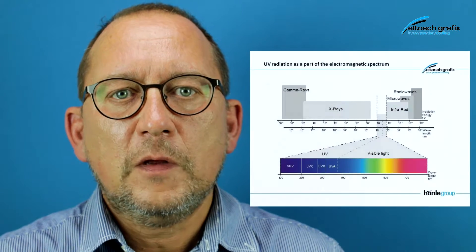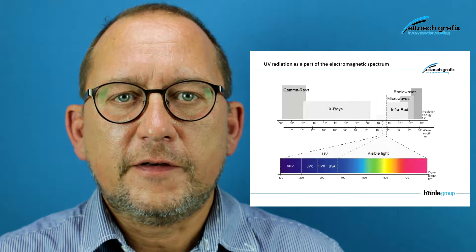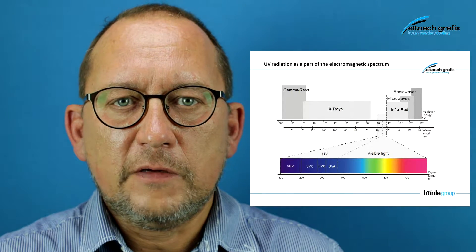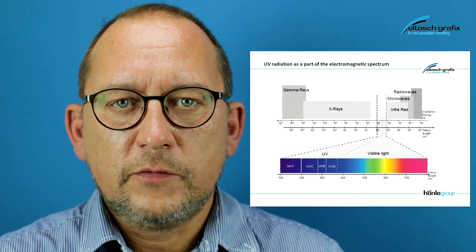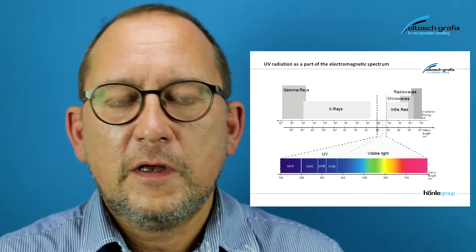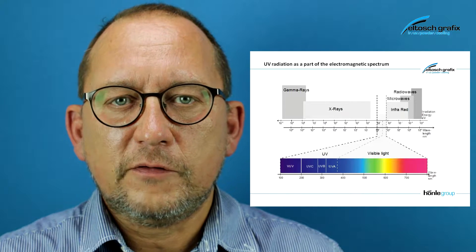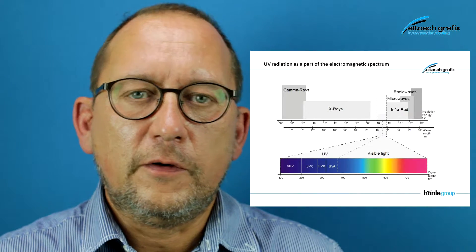If we have a look at the electromagnetic spectrum which you see on the left, you can see we have visible light which starts at about 400 nanometer wavelength. Below that we have UV radiation which starts at about 200 nanometers and ends at about 400 nanometers. Below 200 nanometers we have the so-called vacuum UV, which is also a UV radiation but only exists in vacuum and therefore not in the standard atmosphere.